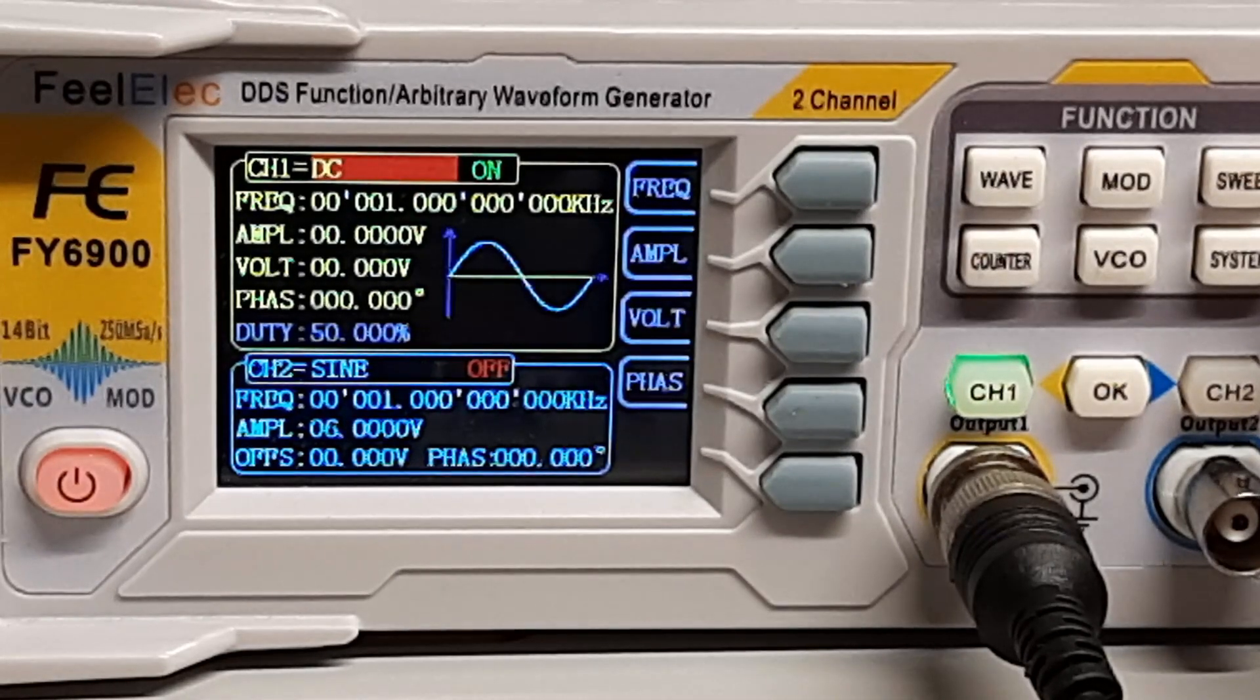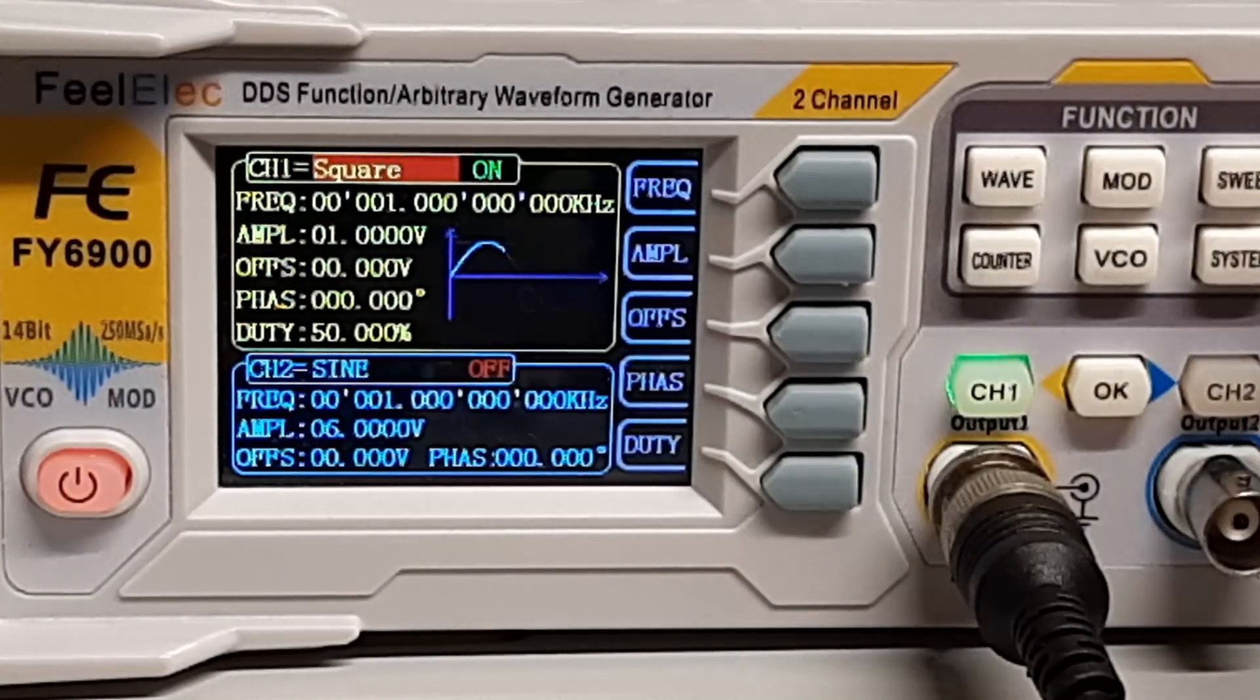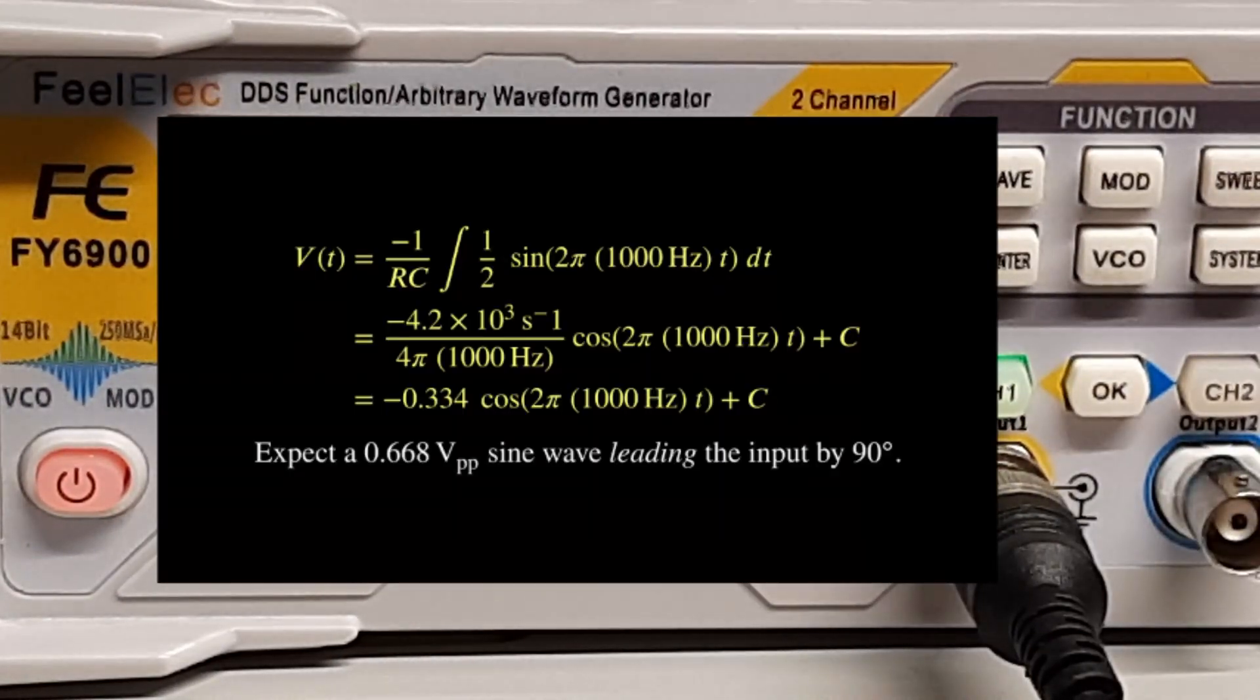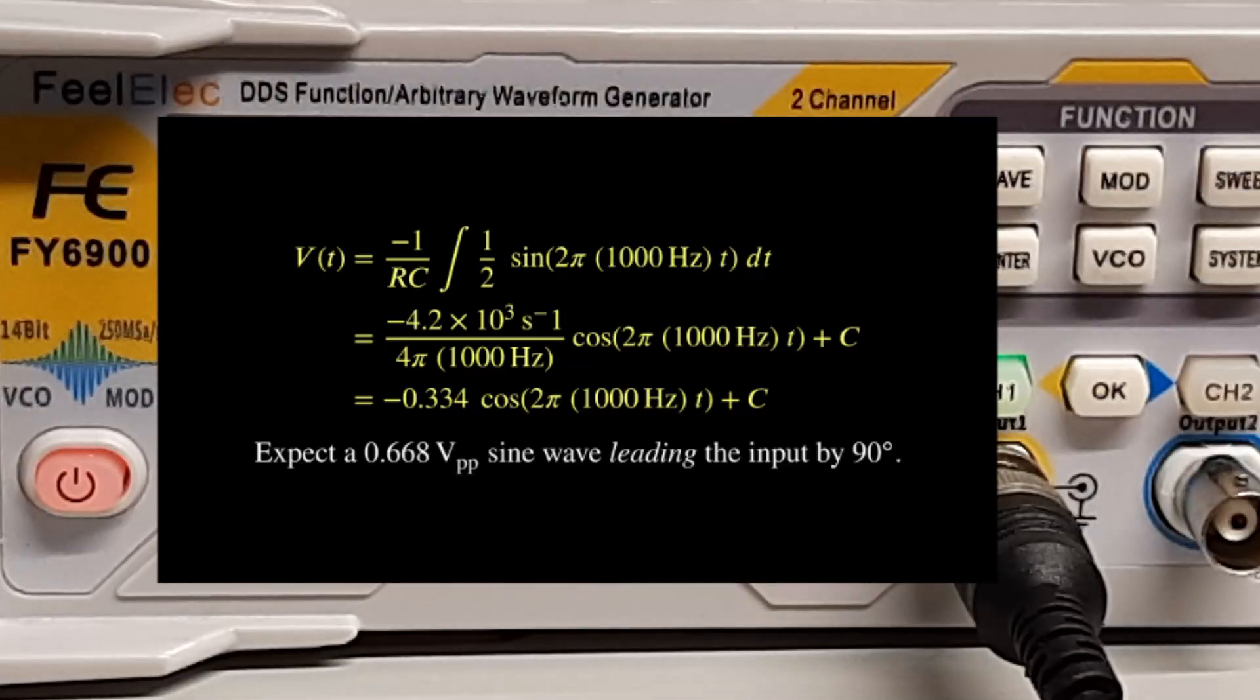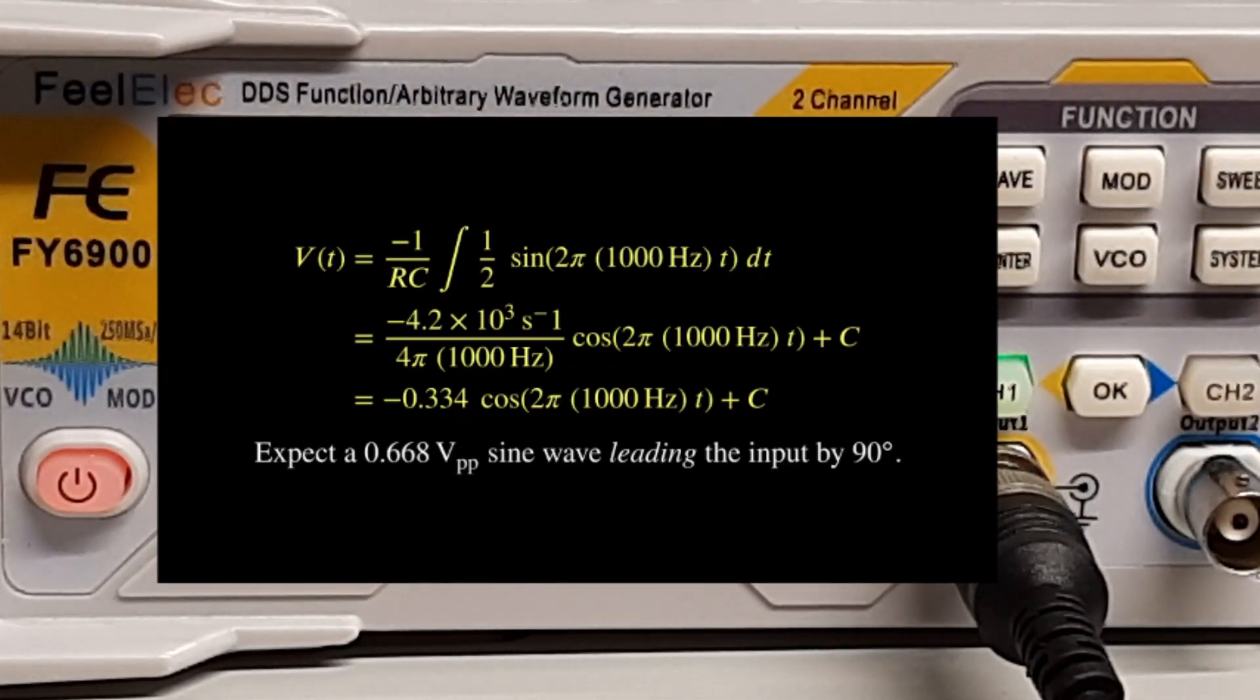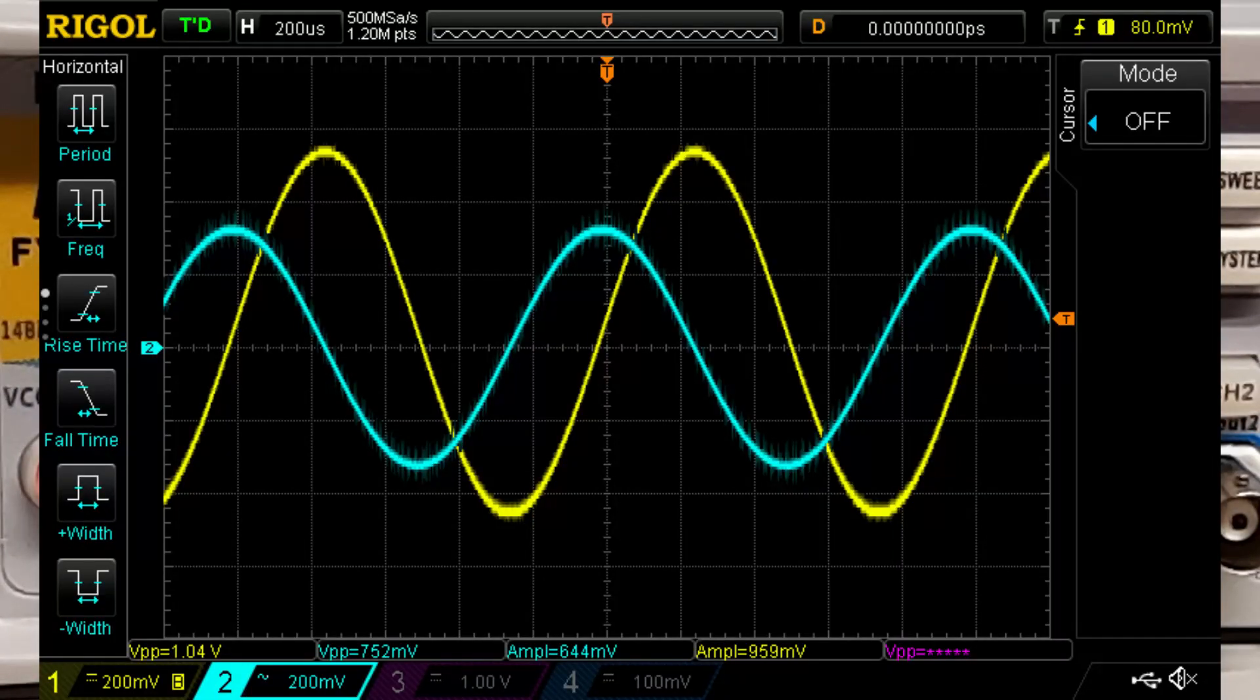Maybe a sine wave? The math now says I should expect a sine wave of about two-thirds of a volt peak to peak, with its phase leading the input by 90 degrees. Right again. It looks as if this thing knows its calculus.